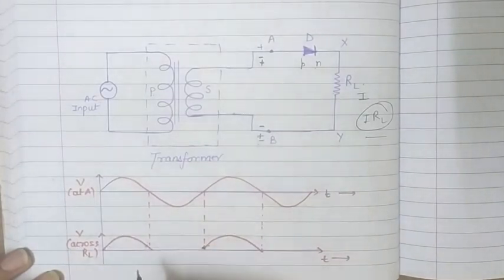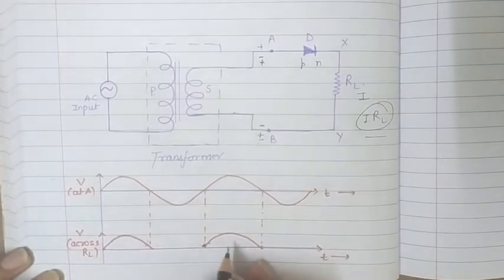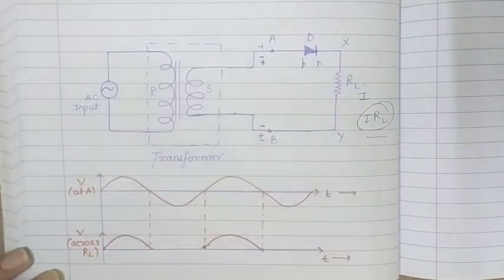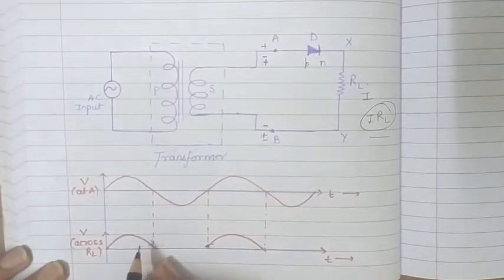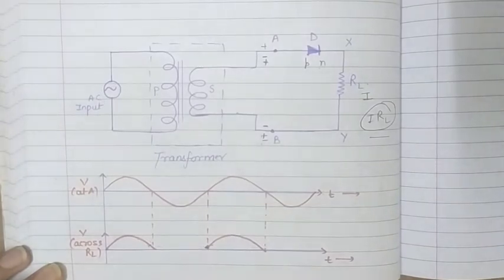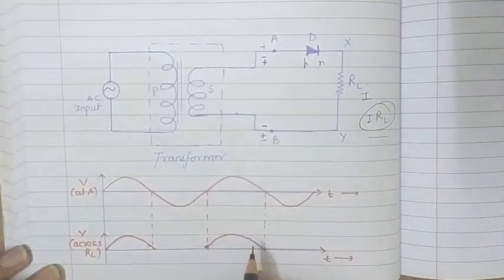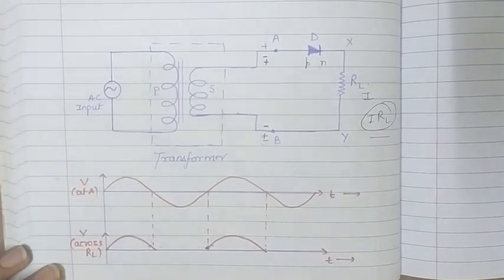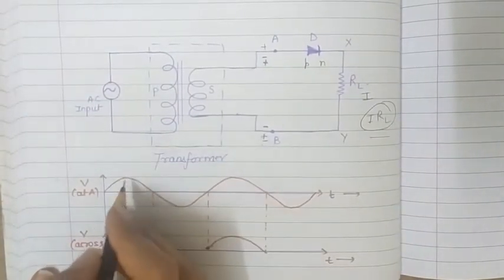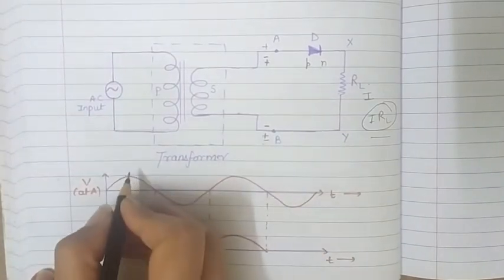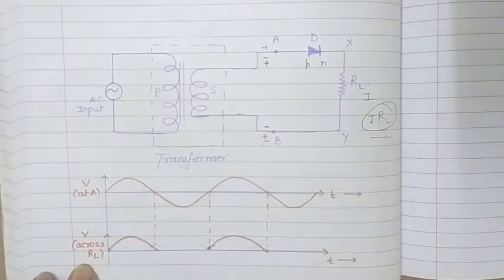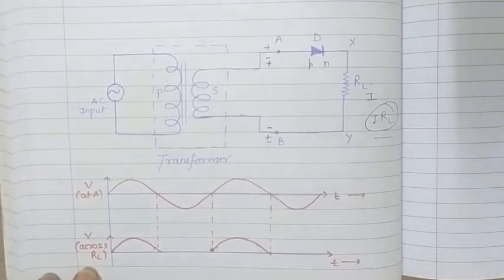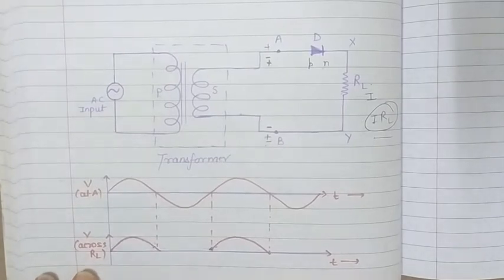When we are getting the negative half cycle, there is no voltage drop and no output. The resultant voltage we are getting is only in one direction - only the positive half cycles. Since the voltage we are getting is only for the positive half cycle, half of the input is giving us output, that's why we call this process half wave rectification and the arrangement is called a half wave rectifier.